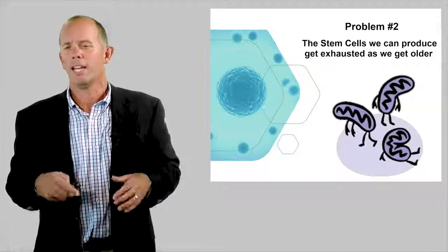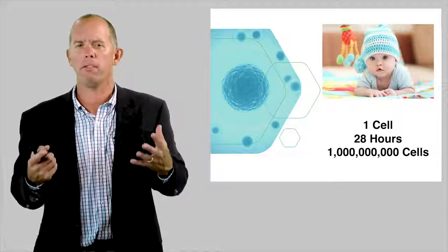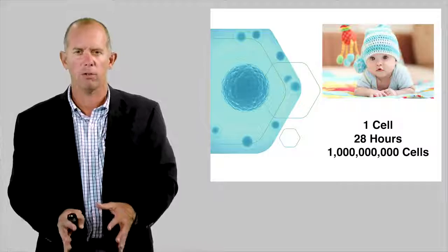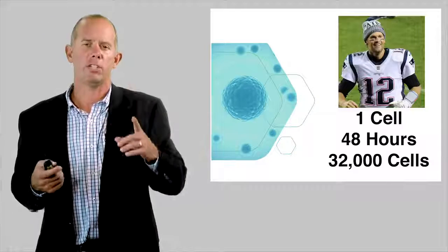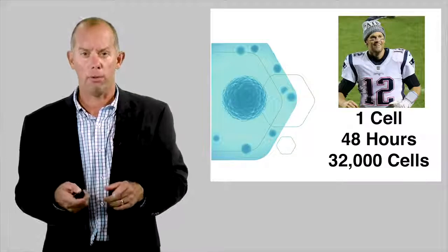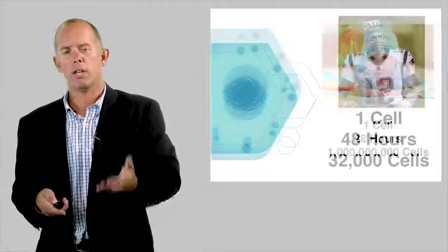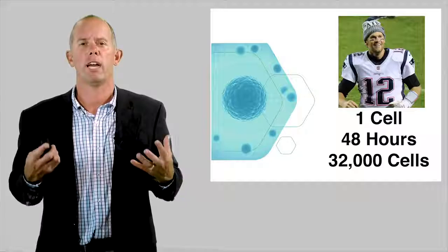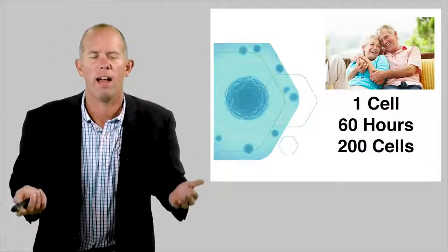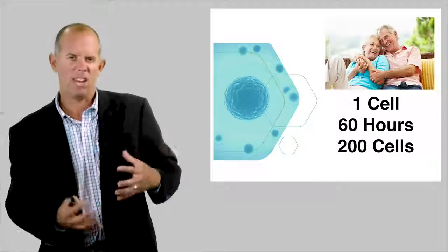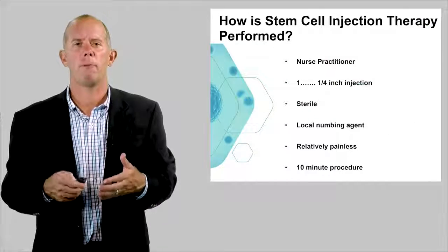Number two, the stem cells we do produce as we get older, they're tired, they get exhausted. So watch this. One cell in that newborn umbilical cord stem cell splits every 28 hours. So in one month, we have roughly a billion cells. Mr. Tom Brady, he's 40 years old. In each month, he only produces 32,000 cells from one. His cells take 48 hours to split, whereas the newborn, the umbilical cord cells take 28 hours. 60 years old, 65 years old, one cell takes 60 hours roughly to split. You have 200 cells at the end of the month. So this is why we do these umbilical cord stem cells.